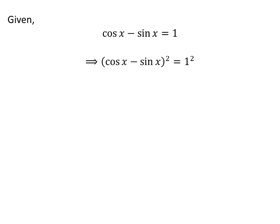Squaring both sides of the above equation gives us: square of (cosine of x minus sine of x) is equal to square of 1.